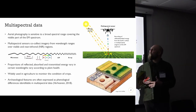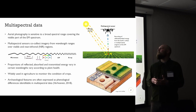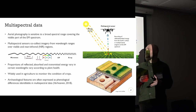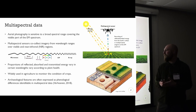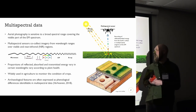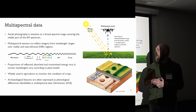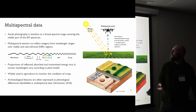I wanted to briefly introduce what multispectral data actually provides. Where aerial photography is sensitive to a broad spectral range covering the visible part of the EM spectrum, multispectral sensors co-collect imagery from different wavelengths over the visible and near-infrared regions. Because these are passive sensors, they measure proportions of reflected, absorbed and transmitted energy in certain wavelengths, which vary according to plant health. As archaeological features alter the chemical and physical properties of the soil matrix, they're often expressed as phenological differences identifiable in multispectral data, so we can use this to identify archaeological features.